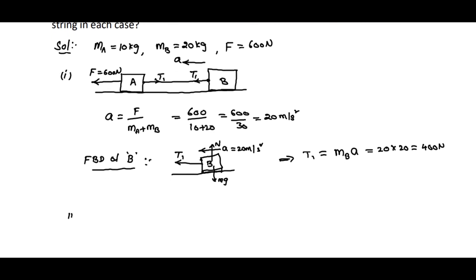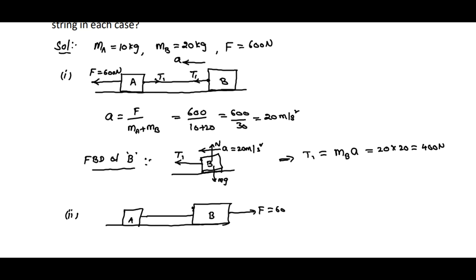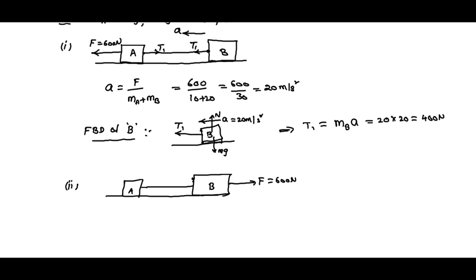Coming to the second part: for the same arrangement of block A and block B, now the force of 600 N is acting on block B. In this case, the tension is named T2. The acceleration for this system is again a = F / (mass of A + mass of B) = 600 / 30 = 20 m/s². The acceleration does not change.